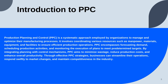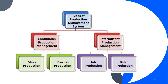Based on the types of production management systems, we can divide them into two parts: continuous production management and intermittent production management. In continuous production management, there are two types: mass production and process production. In intermittent production management, there are two types: job production and batch production.